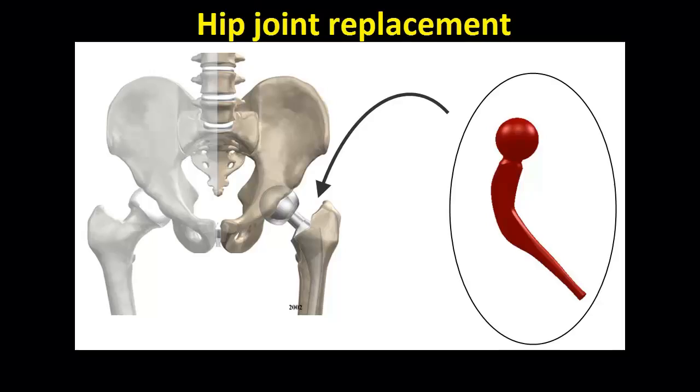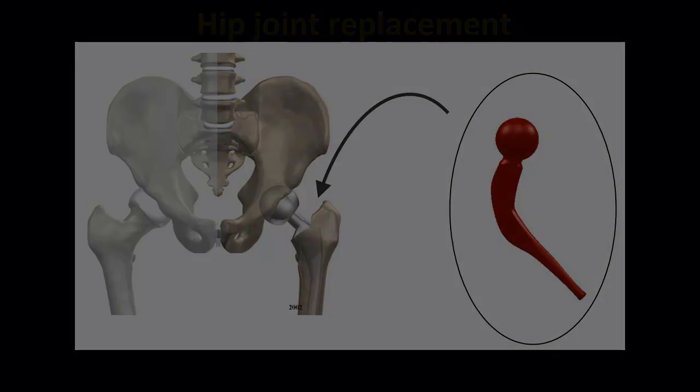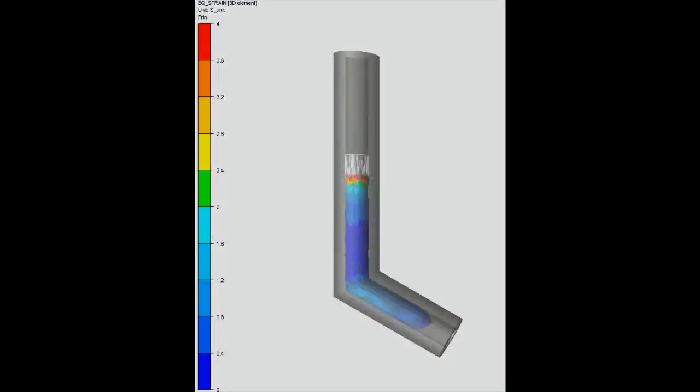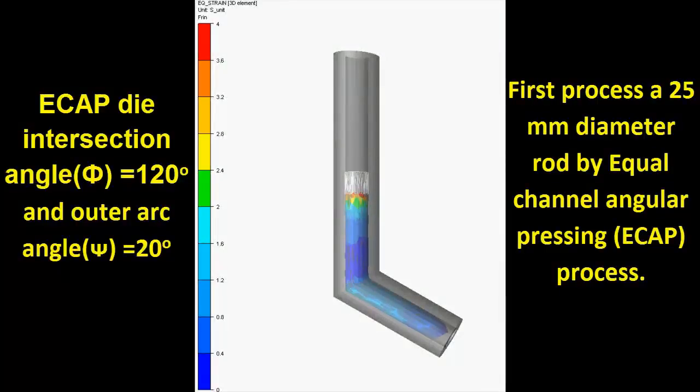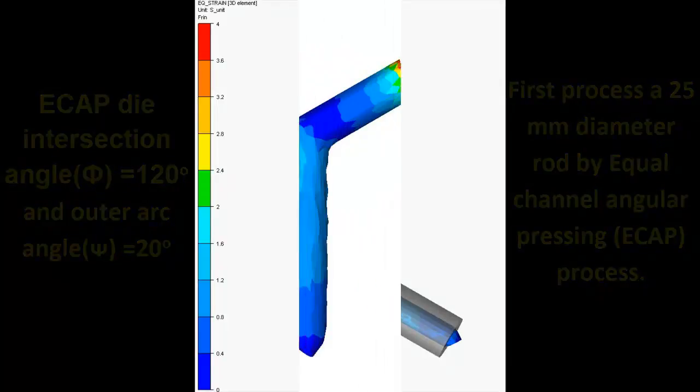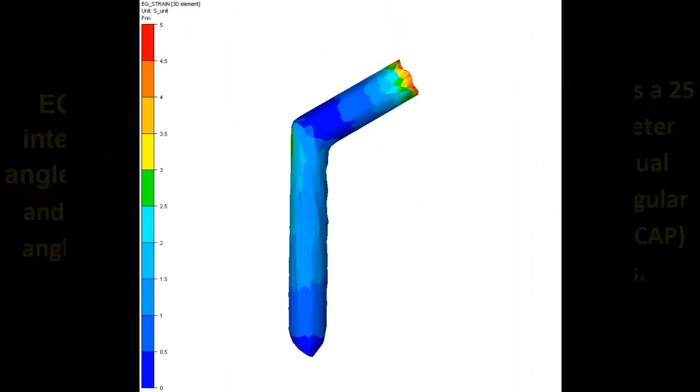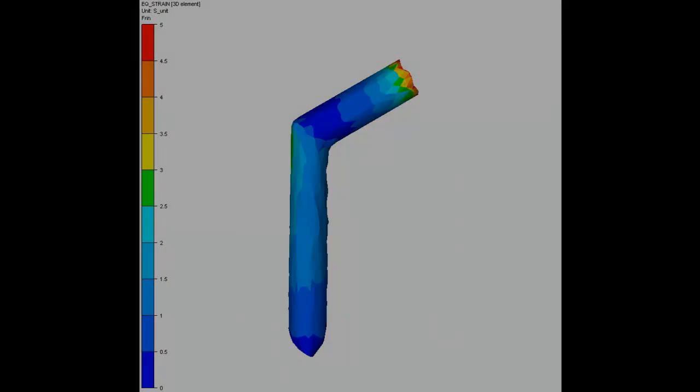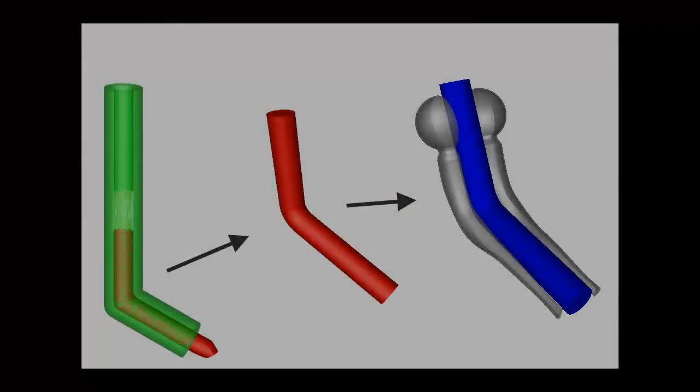Now after processing, the specimen is placed between specially built hip bone shape dies. These dies are hydraulic power operated and transform the ECAP specimen into the desirable artificial hip bone shape.